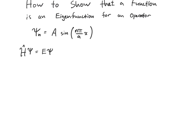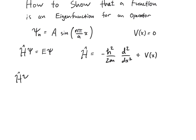The way that we start is by writing out the Hamiltonian operator. You can do this for any operator, but I'm just going to show how these functions are eigenfunctions for the Hamiltonian operator. So here it is: negative h-bar squared over 2m, the second derivative with respect to x, plus some potential function. However, in the case of a particle in a box, our potential function just equals zero. So when I write the Hamiltonian operator acting on a function, it becomes negative h-bar squared over 2m times the second derivative of that function with respect to x. And we're going to calculate what specifically that is.